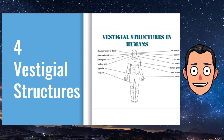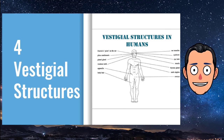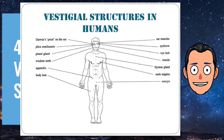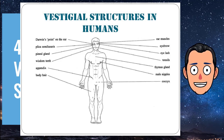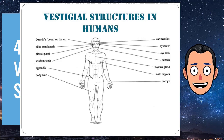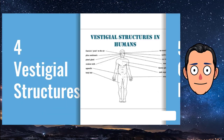Vestigial structures, like the human tailbone, are structures that have been reduced in size because they are no longer used. The human appendix is another example of a vestigial structure. It is a tiny remnant of a once larger organ. In a distant ancestor, it was needed to digest food. However, it serves no clear purpose in humans today.